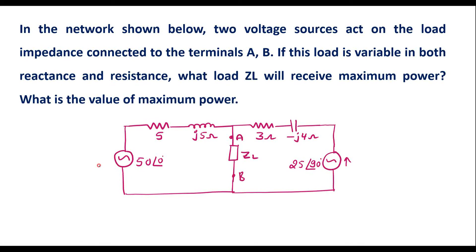In this video, I will consider one numerical on maximum power transfer theorem. In the network shown below, two voltage sources act on the load impedance connected to the terminal A and B. If this load is variable in both reactance and resistance, what load ZL will receive maximum power? What is the value of maximum power?